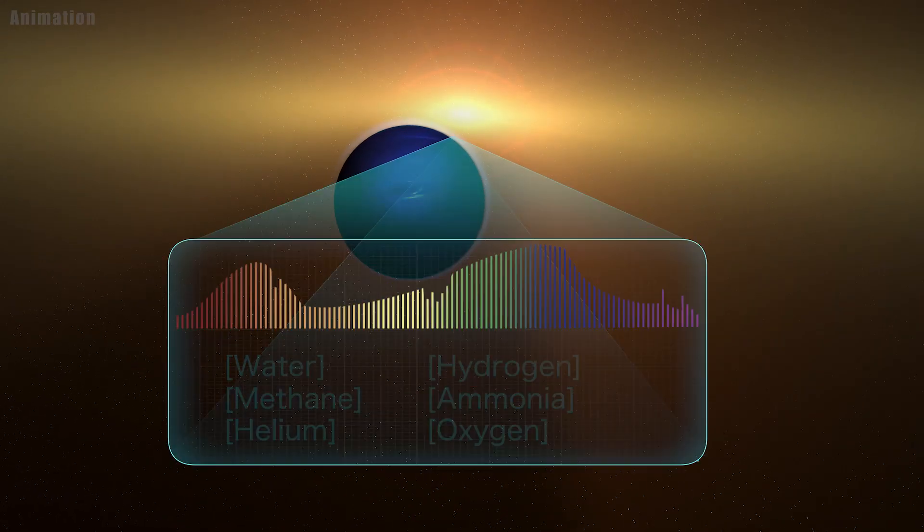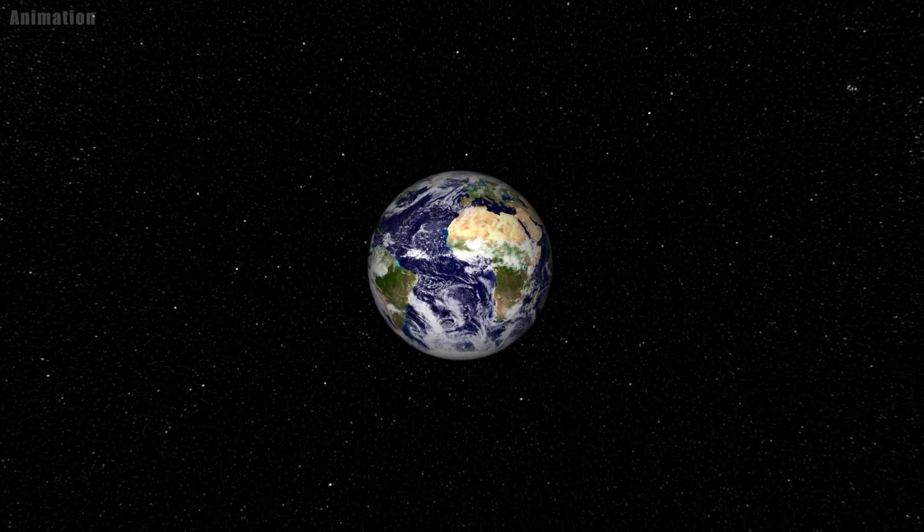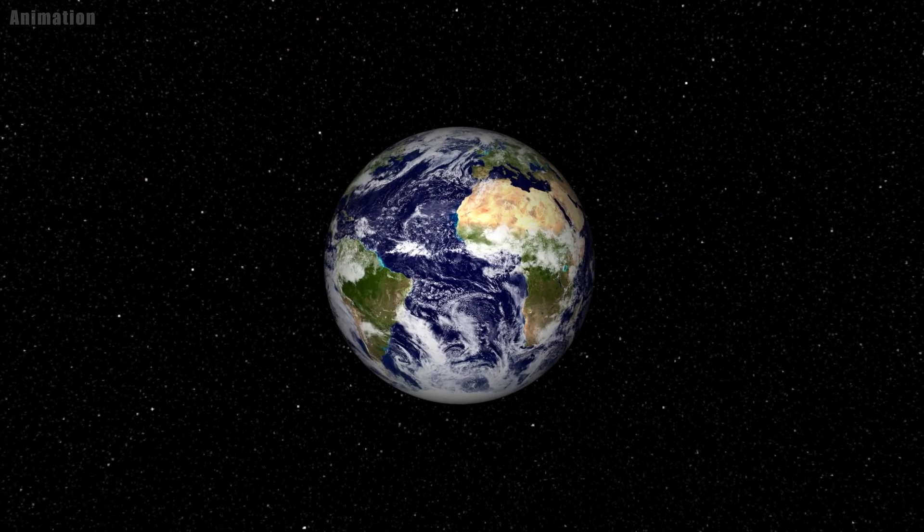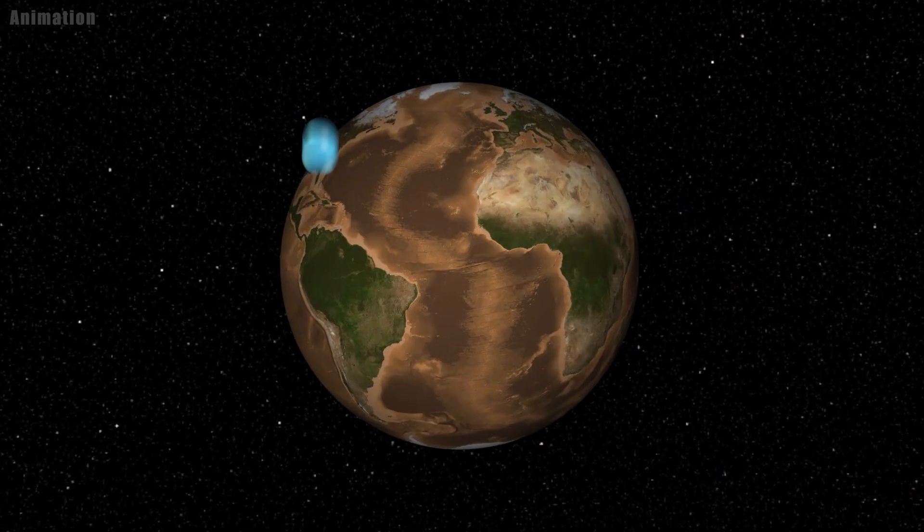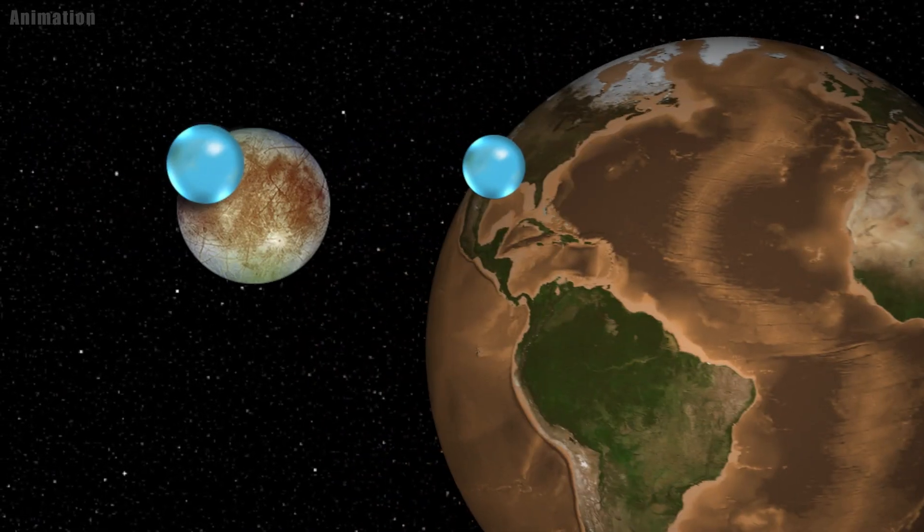Astronomers didn't directly detect water on the Kepler-138 planets. Instead, they compared the planet's sizes and masses to models that concluded up to half of their volume should be made of materials lighter than rock, but heavier than hydrogen or helium.